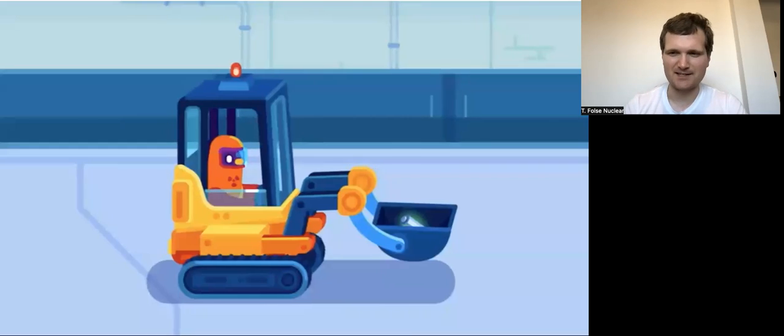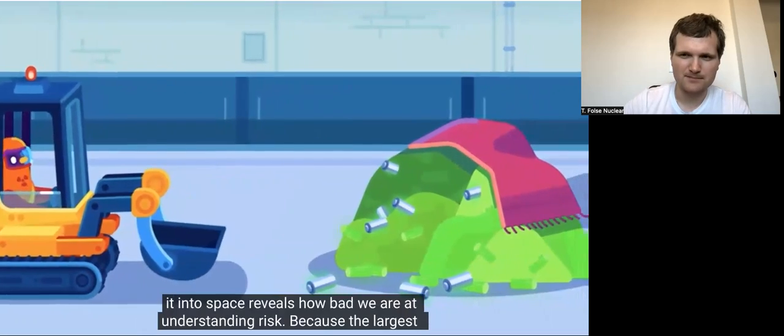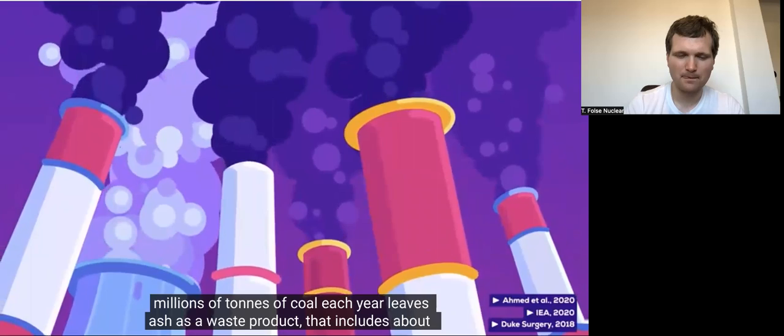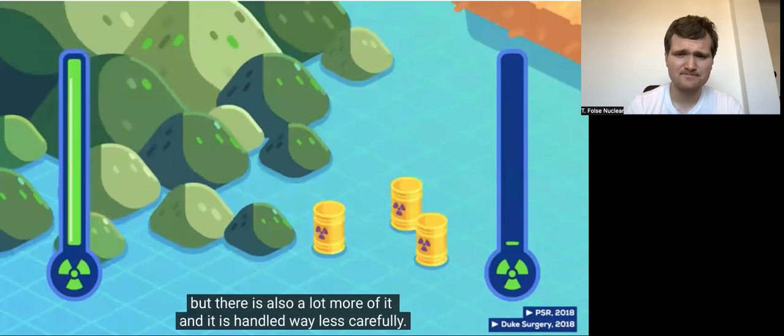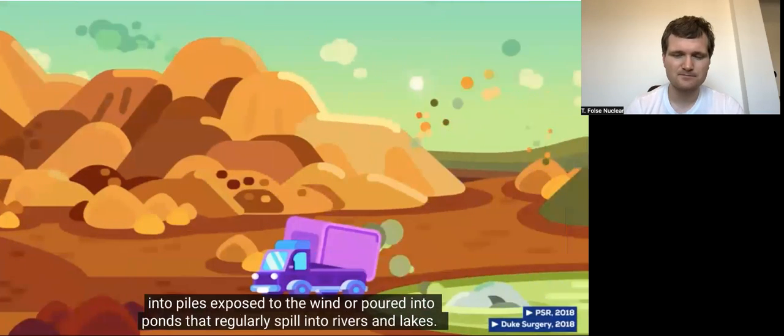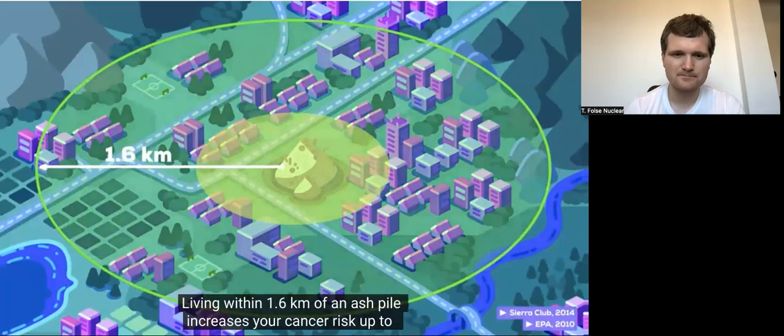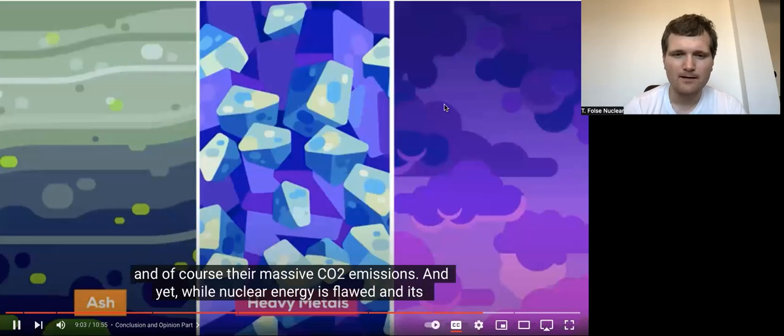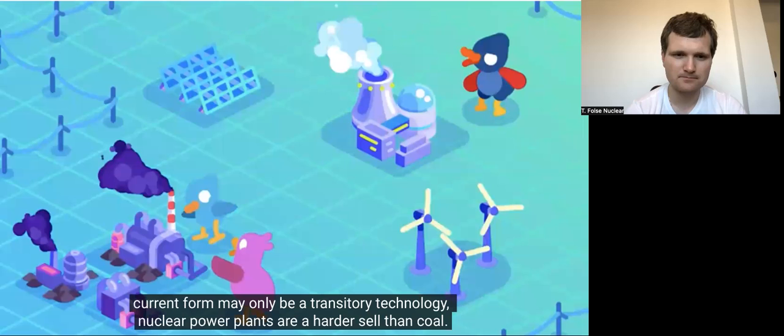Conclusion and opinion part. You wouldn't have explosions like a nuclear bomb, even if that happened, though. But the fear of it, and horrible ideas like shooting it into space, reveals how bad we are at understanding risk. I think they know they're exaggerating that with all the fun little graphics. Are actually released by coal. Burning millions of tons of coal each year leaves ash as a waste product that includes about 36,000 tons of radioactive materials. That is true. Less radioactive than high-level nuclear waste, but there's also a lot more of it, and it's handled way less carefully. Some of this ash is caught by filters, but most is completely pushed back into leaky mines, shoved into piles exposed to the wind, or poured into ponds that regularly spill into rivers and lakes. Living within 1.6 kilometers of an ash pile increases your cancer risk up to 2,000 times over the acceptable limit. And this is on top of other toxic chemicals like heavy metals and, of course, their massive CO2 emissions. And yet, while nuclear energy is flawed and its current form may only be a transitory technology, nuclear power plants are a harder sell than coal.